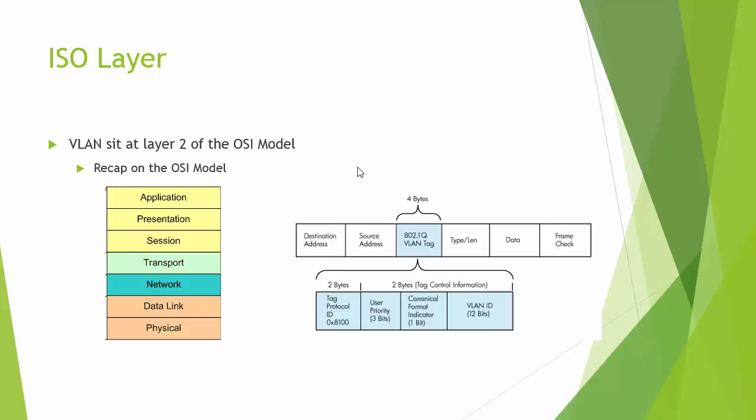Further up the model we have TCP, UDP, right up to the application layer — FTP, HTTP, and so on. At the data link layer we have destination and source MAC addresses, and this is where the VLAN tag gets inserted. Then this is where the data frame sits — ultimately a packet of information with an IP header, IP source, port information, and payload.